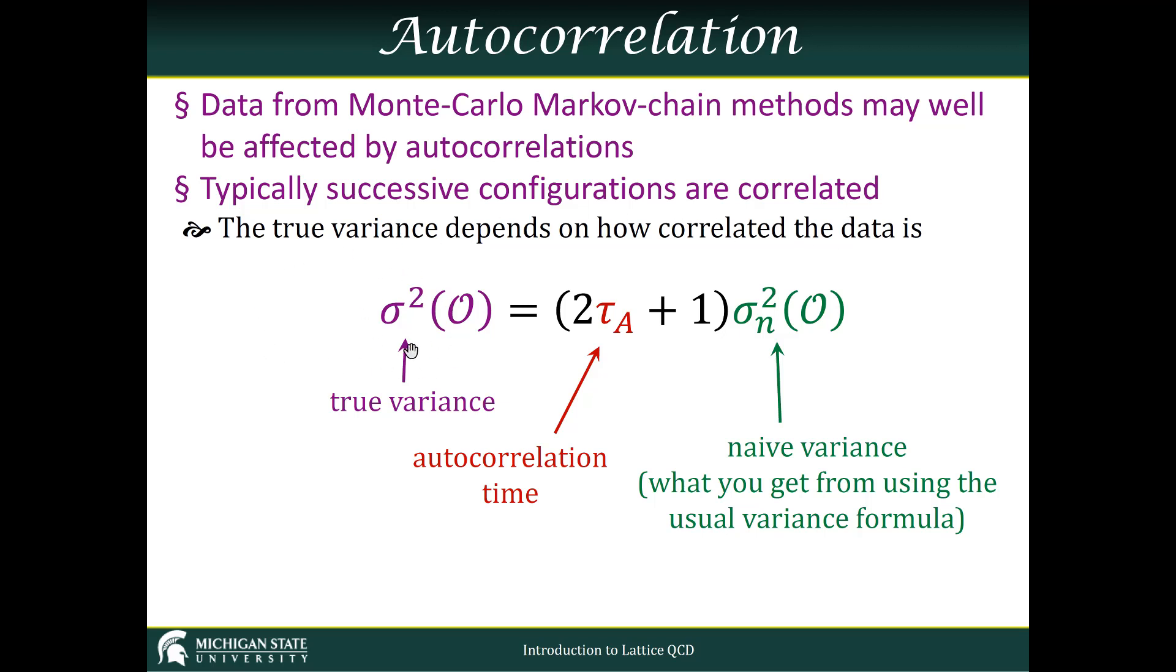The true variance, which we denote by σ²(O), is defined to be twice the autocorrelation time plus one, times the naive variance. That is, what you would get if you use the jackknife procedure that we discussed earlier.